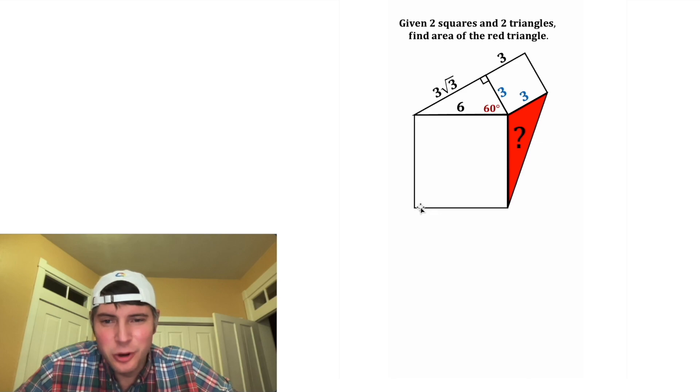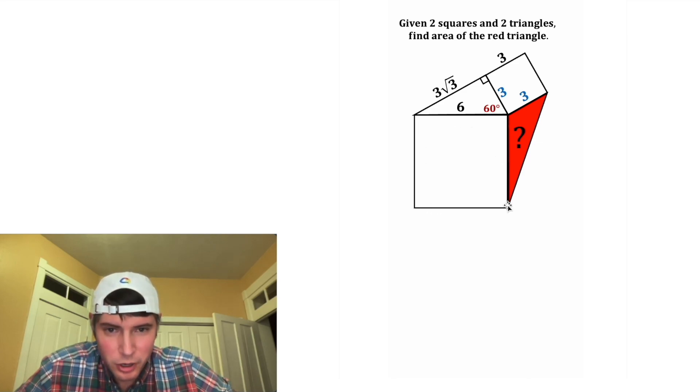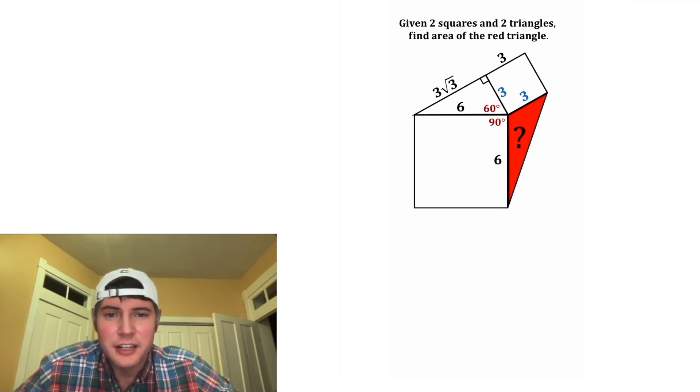And now looking at this lower square, all the sides are congruent, so this last side will also be equal to six. Another property of squares, all of these angles are right angles, so we can call this 90 degrees here. And in this square, this would be 90 degrees.